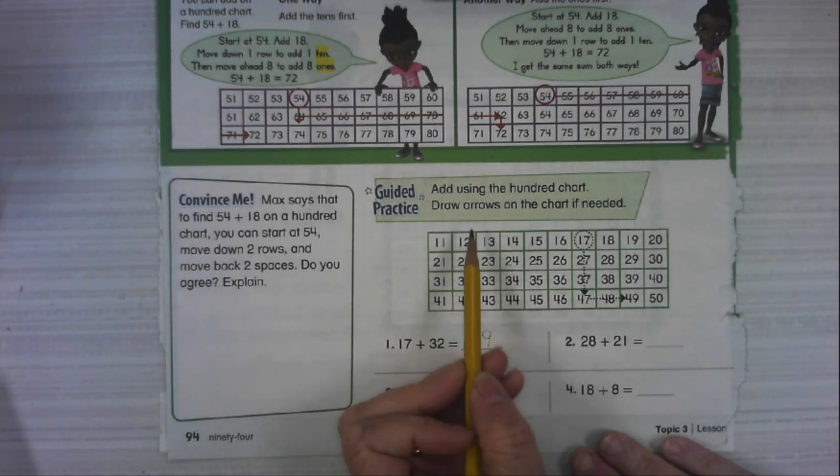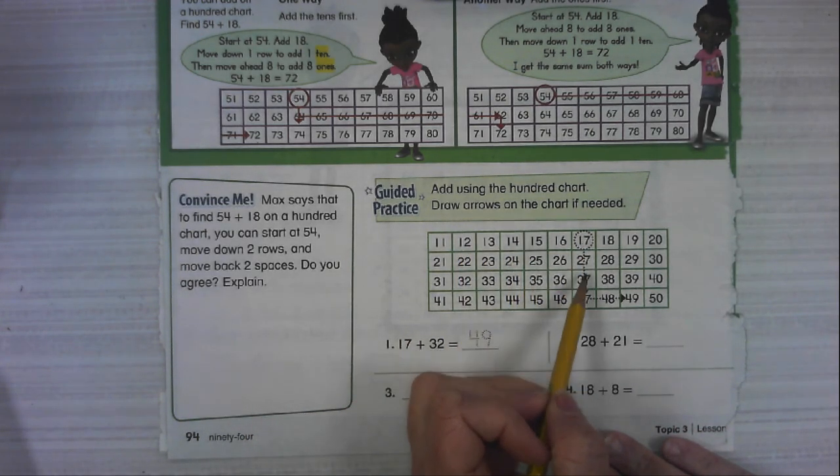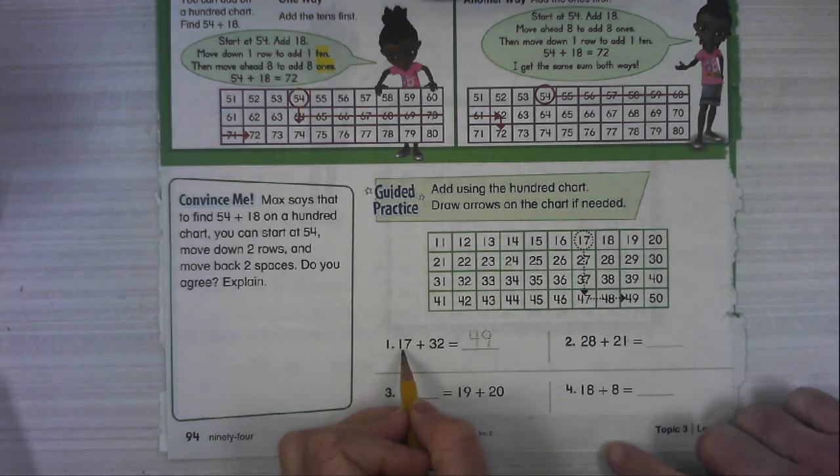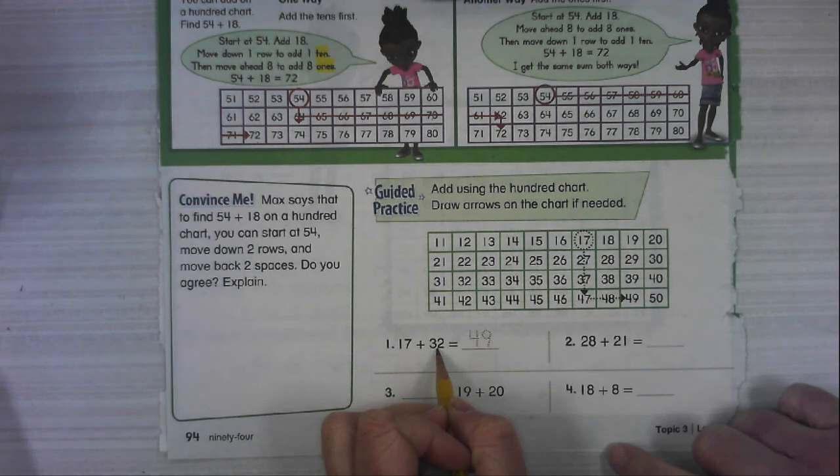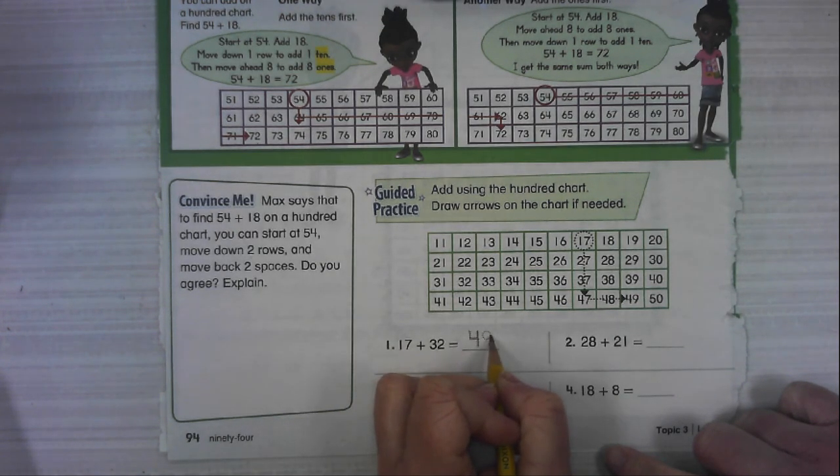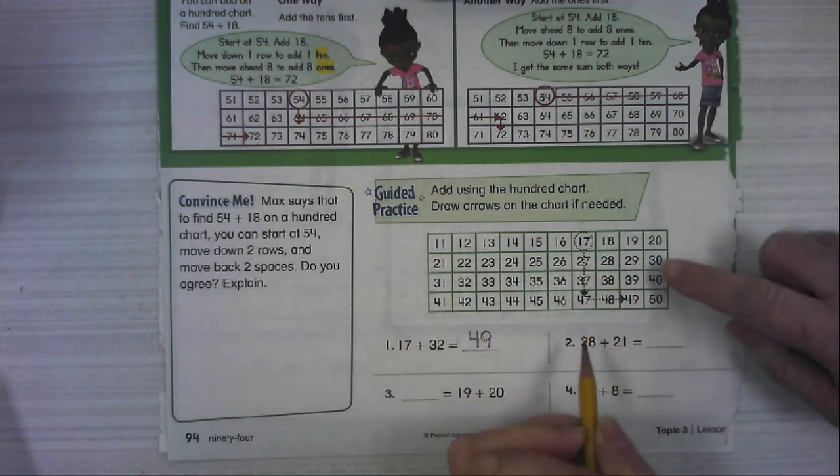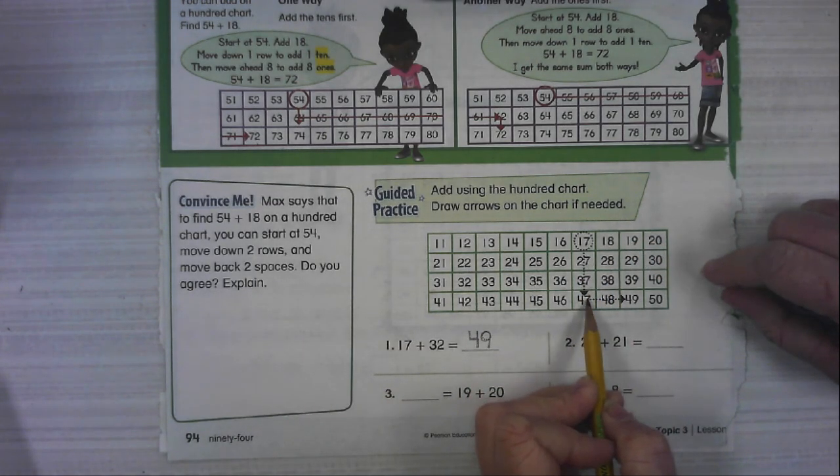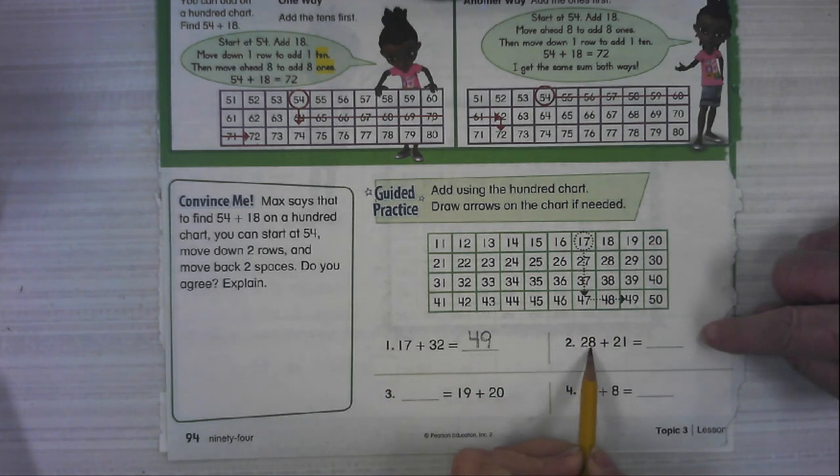Number one, add using the hundreds chart. We're going to draw arrows on the chart if we need to. 17 plus 32. Now they didn't start with the greater addend. It'll be okay. They're going to get the same answer as we saw on the front. And they got 49. They went down 10, 20, 30, and over 2.